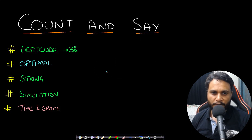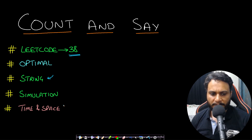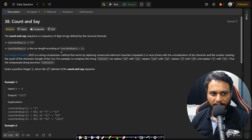Hello guys, welcome back to TakeDose. In this video we will look at the Count and Say problem, which is LeetCode number 38. This is from the string category and the most challenging part of this problem is to analyze the time and space complexity, which we will be discussing at the end. Let's now read the problem statement.